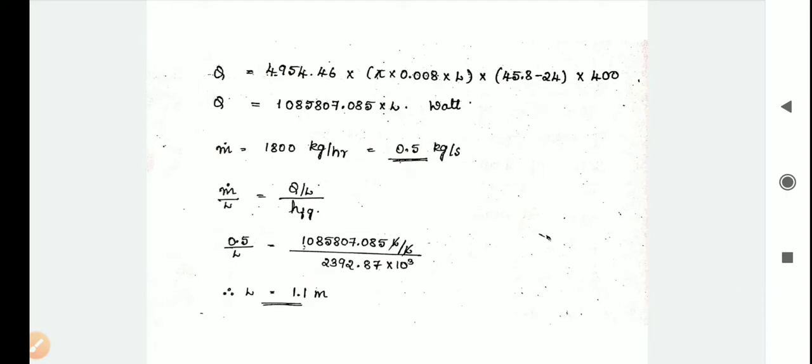0.5 divided by L equals 1085807.085 L divided by L, divided by h fg value 2392.87 times 10 raised to 3. The L value will be 1.1 meters. Thank you.